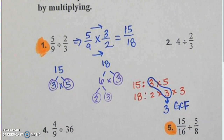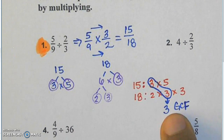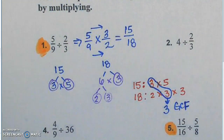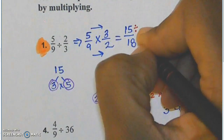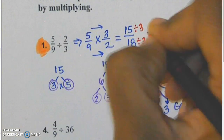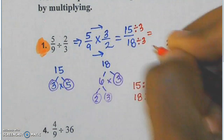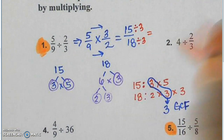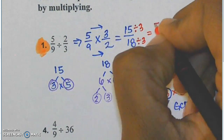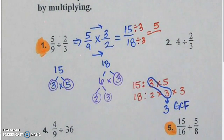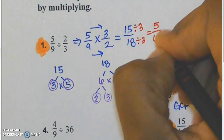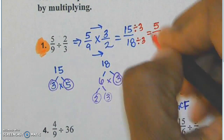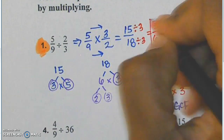My GCF is three. I take my GCF and go back to my fraction, and I use my GCF to simplify my fraction by dividing the numerator and denominator by it. How many groups of three in 15? Five. How many groups of three in 18? Six. So my final answer is going to be five sixths.